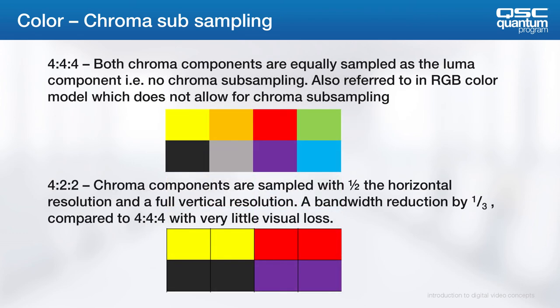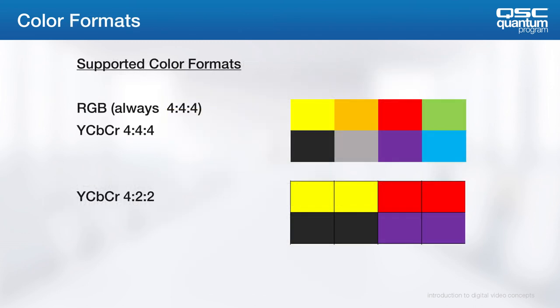For example, 4:4:4 means 4 samples, 4 unique samples in the first row, and 4 unique samples between the first and second row. 4:2:2 means 4 samples, 2 unique samples in the first row, and 2 unique samples between the first and second row — this provides a bandwidth reduction of one third. The supported color formats are RGB, which is always 4:4:4, and YCbCr in both 4:4:4 and 4:2:2.